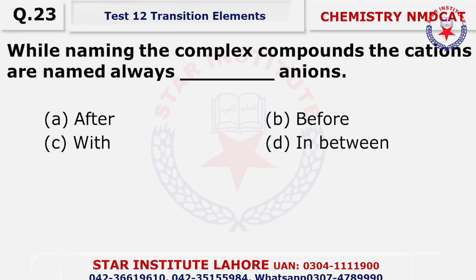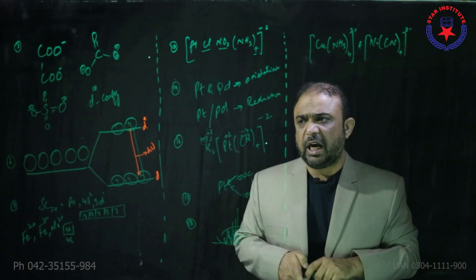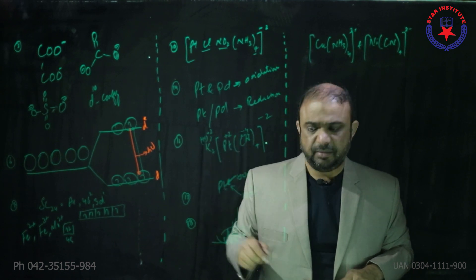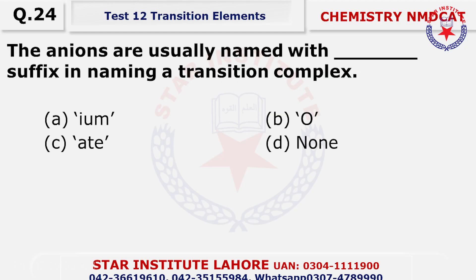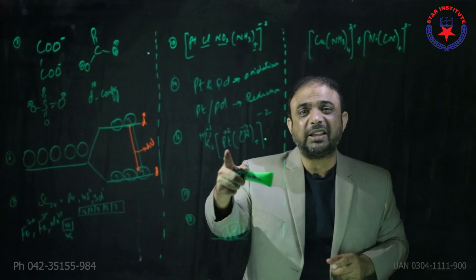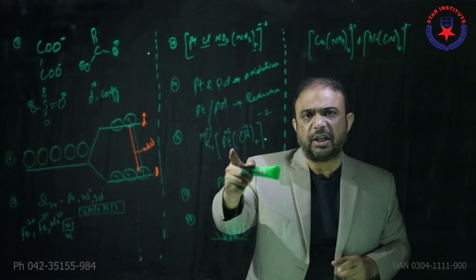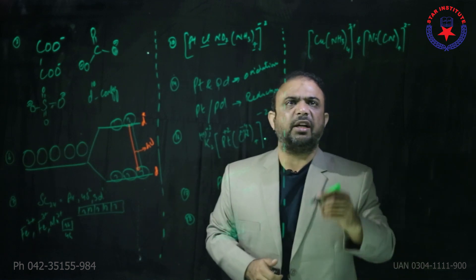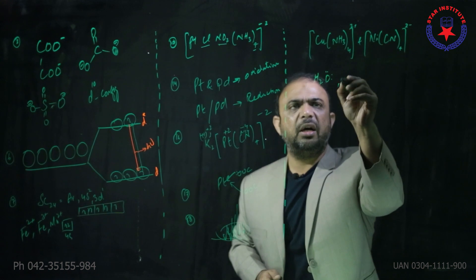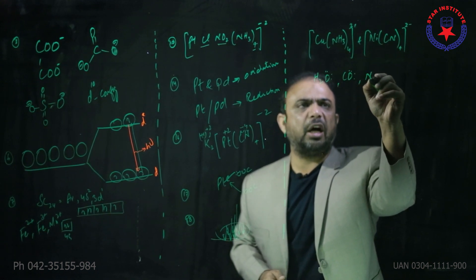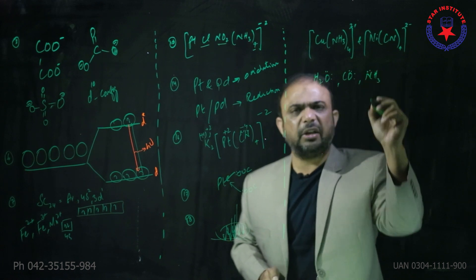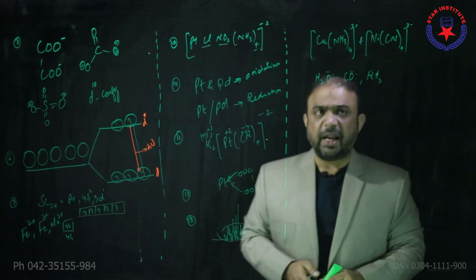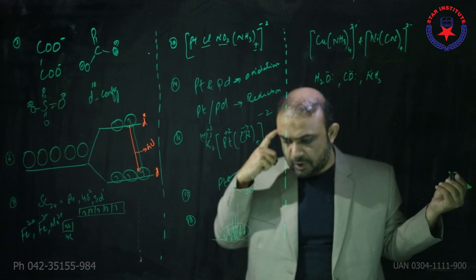Question twenty-three: while naming transition metal complexes, cations are always named before anions — for example the name starts with potassium, then potassium tetra cyanoplatinate. The anions are usually named with a suffix — like platinate, because if the complex anion has a negative charge, the metal ends with 'ate'. Remember three neutral ligands: aqua, carbonyl, and amine are the neutral ligands — these are the famous ones you must know.